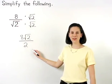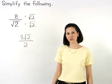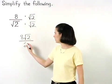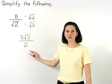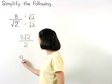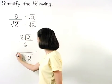So, we have 8 root 2 over 2. As our final step, we can divide the 8 that is outside the radical in the numerator by the 2 in the denominator. 8 divided by 2 is 4, so our final answer is 4 root 2.